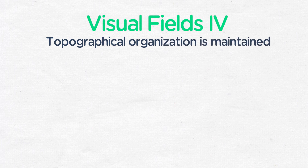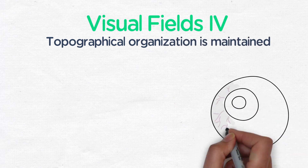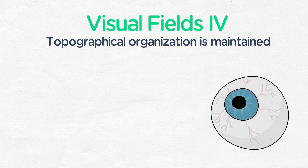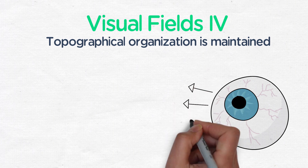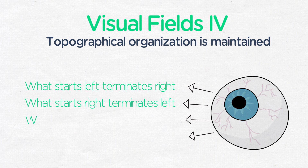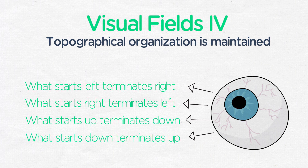The topographical organization of the visual fields is maintained throughout its course through the central nervous system to the occipital lobe. Though in oversimplification, what starts in the left superior visual field ends up in the right inferior occipital lobe. To summarize: what starts in the left terminates in the right, what starts in the right terminates in the left, what starts up terminates down, and what starts down terminates up.